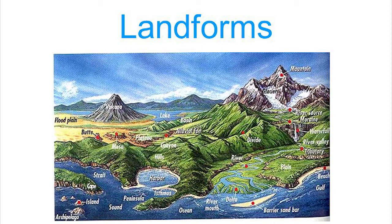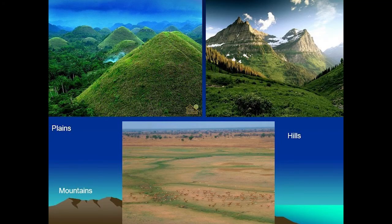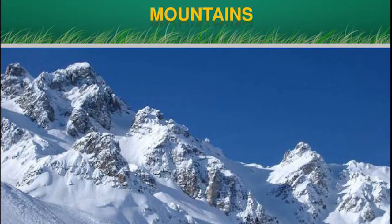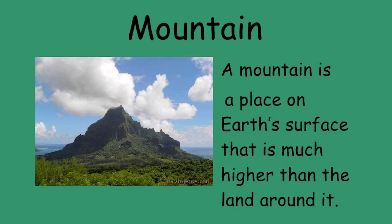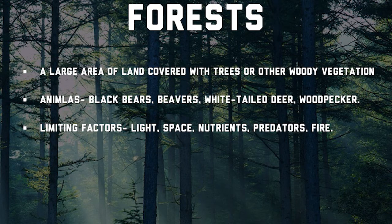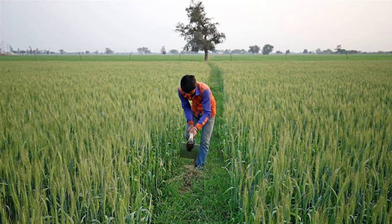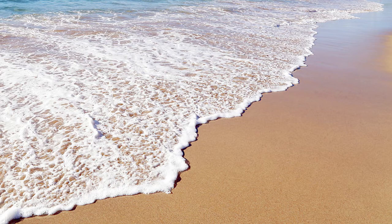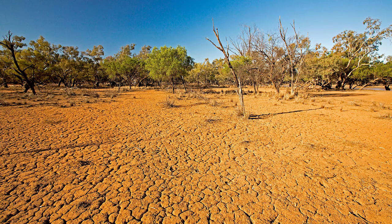Landforms are further categorized into mountain, forest, plain, seashore, and desert. Mountains are the large area that rises above the surface of the earth. Forest is the large area that is covered by trees. Flat, vast land used for agriculture is called plain. Seashore is the salty water bodies that cover the large surface of the earth. The region with less or without rainfall is called dry land or desert.